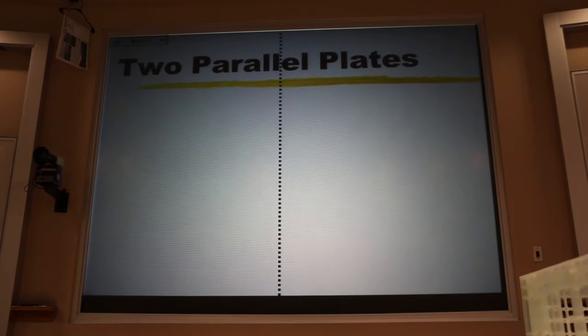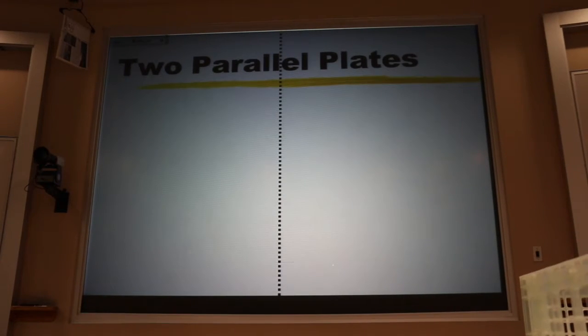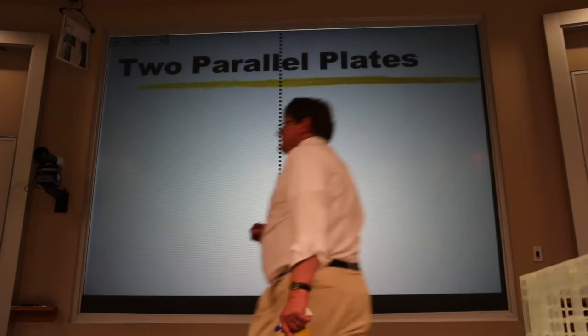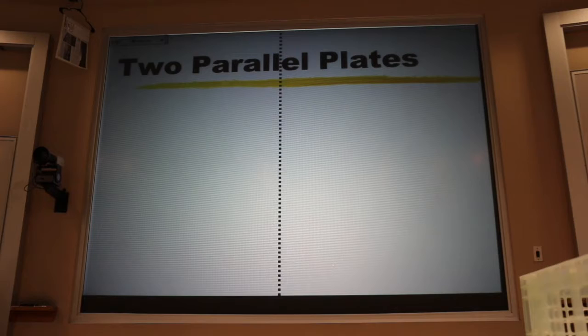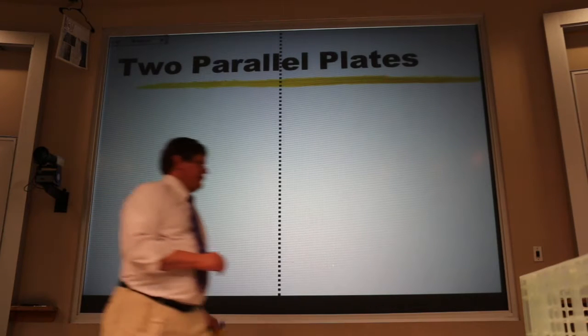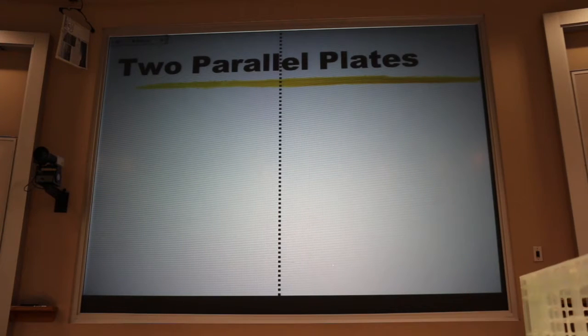One more big idea that you need, and that is that almost never, very rarely, do we have a single sheet of charge. Typically what we have is two sheets, one positive and one negative.